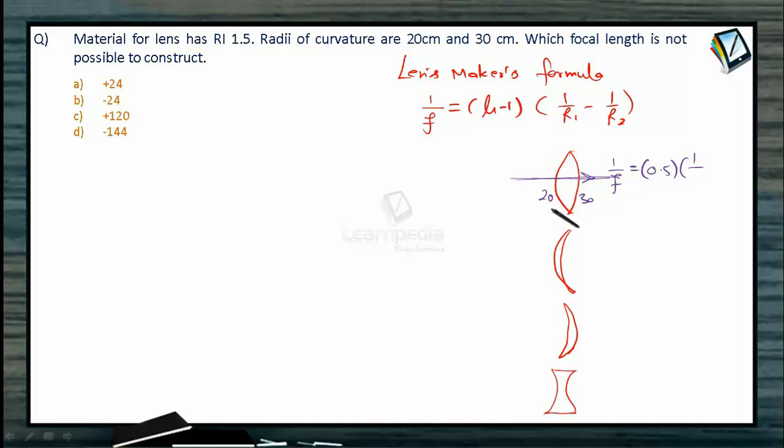So first surface is R1 which is 20. So 20 is on the positive side. Center of curvature for this surface is on the positive side, so +20. And minus 1/R2, for R2 is 30 and its center of curvature is on the negative side, so it becomes -30. So effectively it becomes 0.5 into (1/20 + 1/30) and this way the focal length for this situation that we get is 120 cm which is one of the options.